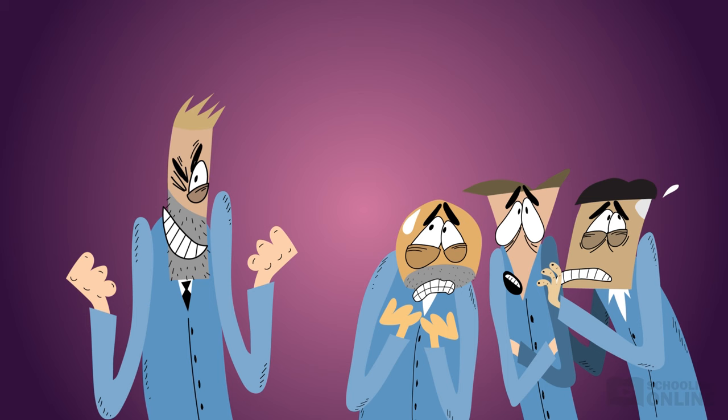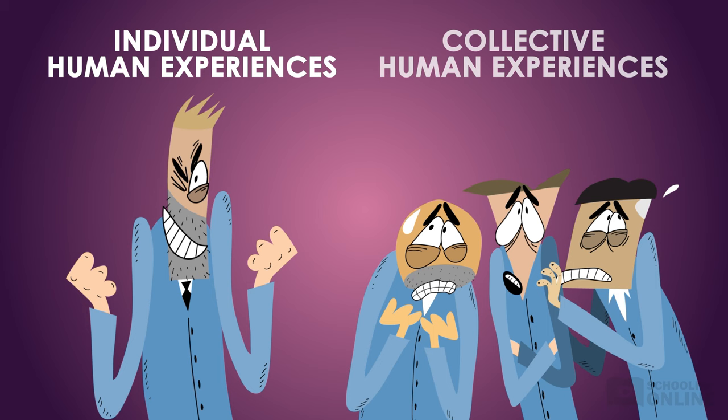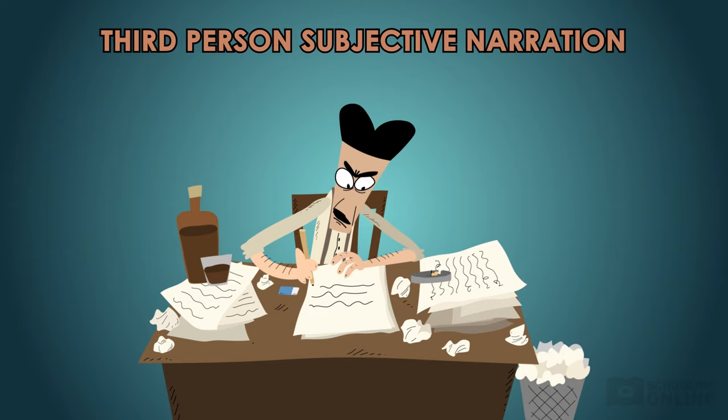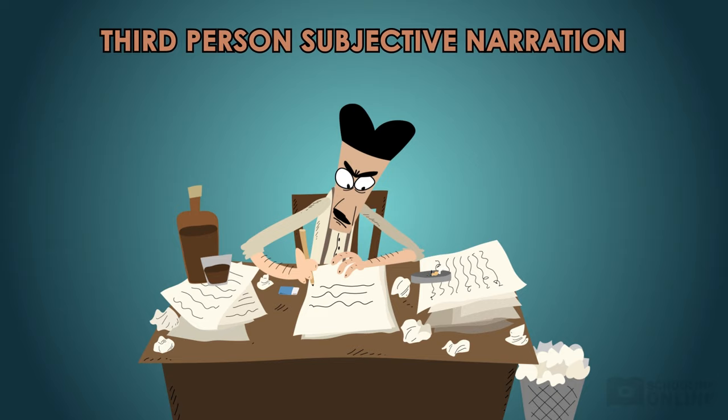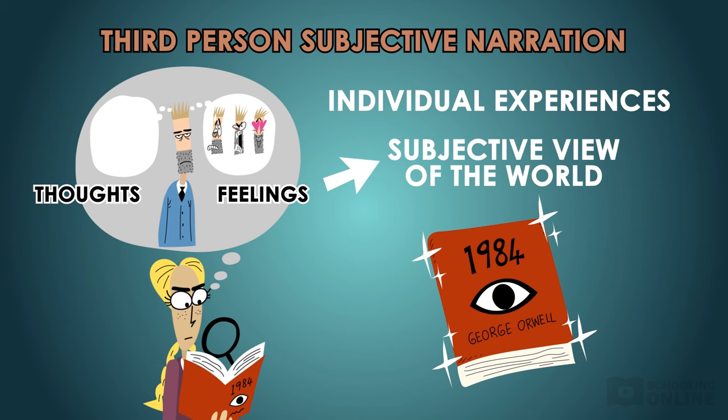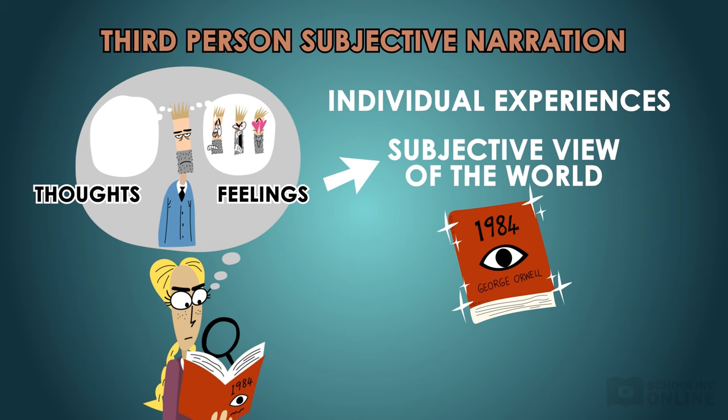First, let's figure out how the novel represents individual and collective human experiences. Orwell's decision to write the novel using third-person subjective narration gives us access to the protagonist's thoughts and feelings and a privileged view into the life of Winston Smith. His individual experiences in the dystopian world of 1984 are revealed to us through the narration. This would be an important point to raise if you were asked a question in Paper 1, Section 2, that focused on the novel's form.